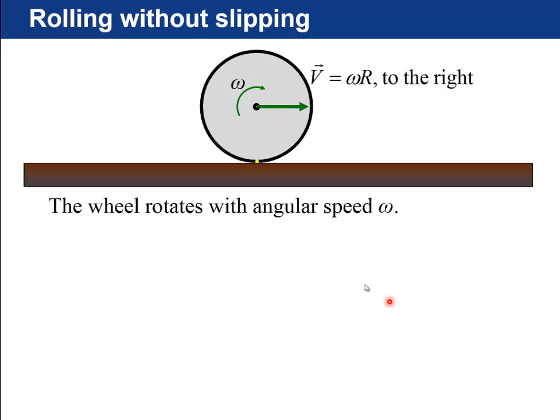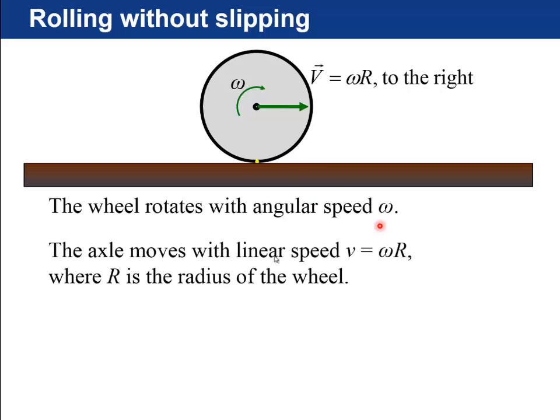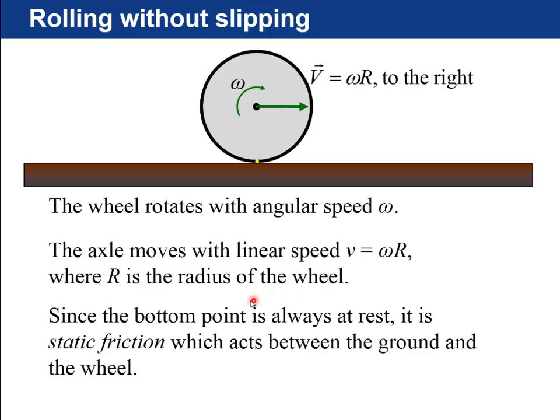And so just to sum up, the wheel rotates with angular speed omega, the axle moves with linear speed omega times r, where r is the radius of the wheel, and since the bottom point is always at rest, it's static friction, which acts between the ground and the wheel. It's one of the important things here.